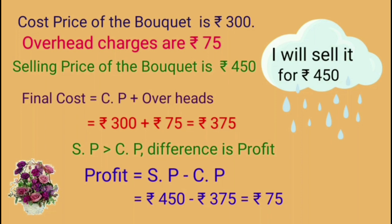Now this final cost is compared with the selling price, which is 450 rupees. SP is greater than CP, so the difference is profit. To find profit, we have to subtract cost price from selling price. SP minus CP, that is 450 rupees minus 375 rupees. The difference is 75 rupees, which is profit for Farah on each bouquet.